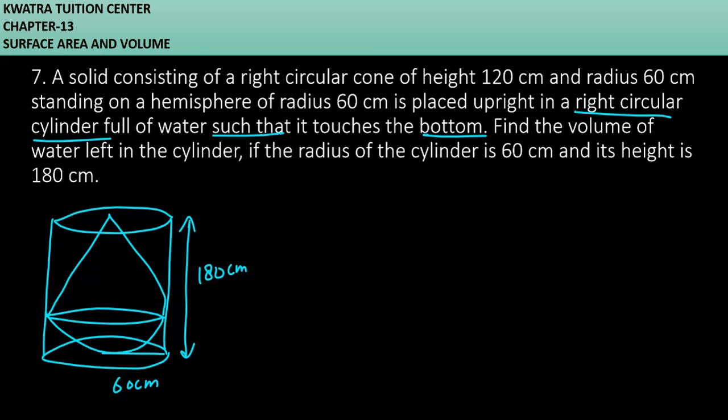We need to find the volume of water left in the cylinder — that means how much space is left. The radius of the hemisphere is 60 cm. Since the total height is 180 cm and the hemisphere accounts for 60 cm, the height of the cone is 180 minus 60, which is 120 cm.